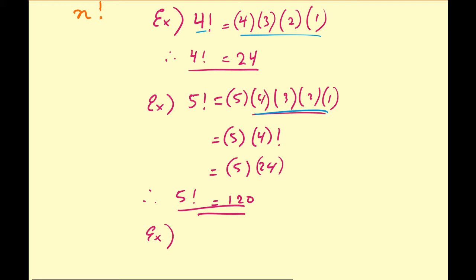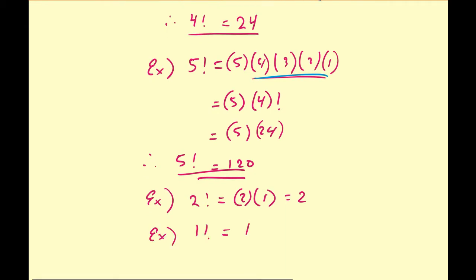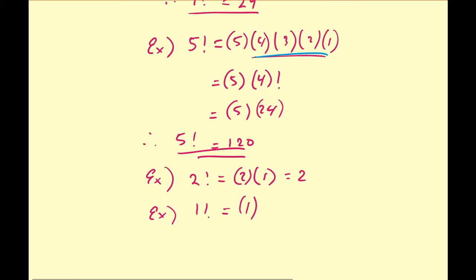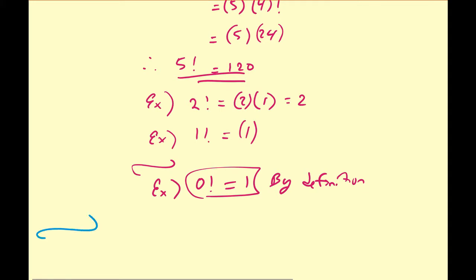Some basic ones: 2 factorial is just 2 times 1, which equals 2. And 1 factorial equals 1, since that's the least natural number. There is one special case: 0 factorial equals 1. Most people take this by definition only. There are many reasons why this convention is taken — mainly to make formulas nice for probability, statistics, and combinatorics problems — but we'll just assume 0 factorial equals 1.